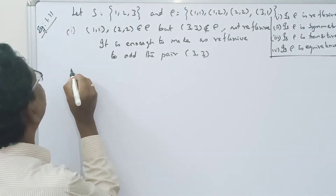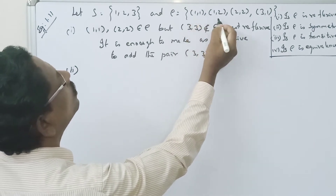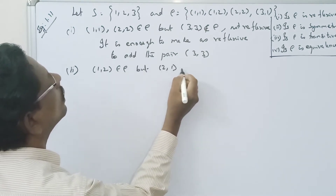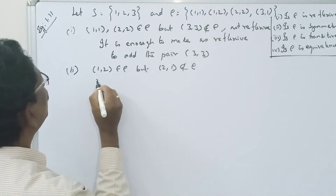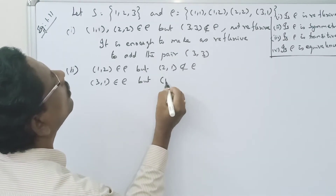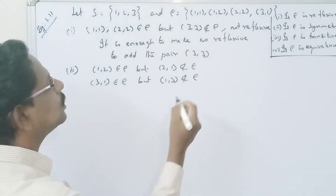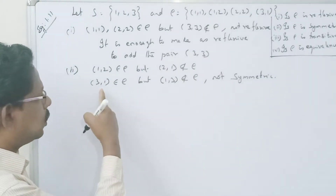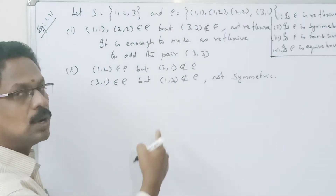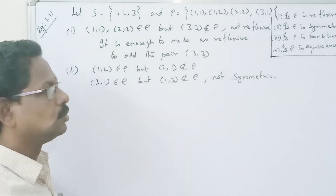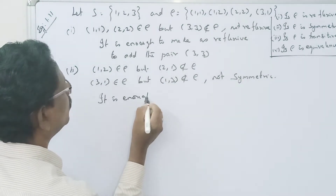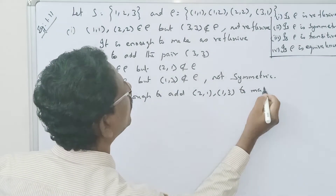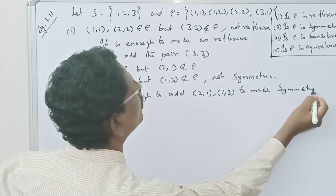Now for symmetry: (1,2) belongs to R but (2,1) does not belong to R. Also (3,1) belongs to R but (1,3) does not belong to R. Therefore R is not symmetric. It is enough to add the pairs (2,1) and (1,3) to make R symmetric.